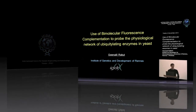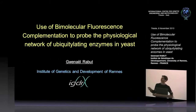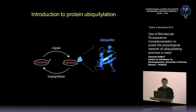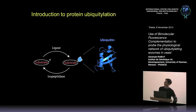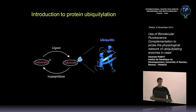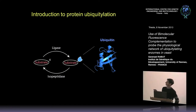Let me introduce protein ubiquitination. This is a very prominent and important post-translational protein modification in the cell. It is conserved in all eukaryotes and is essential for cell viability. It consists of the attachment of a small protein, ubiquitin — a 76 amino acid protein — to lysine residues of substrate proteins.